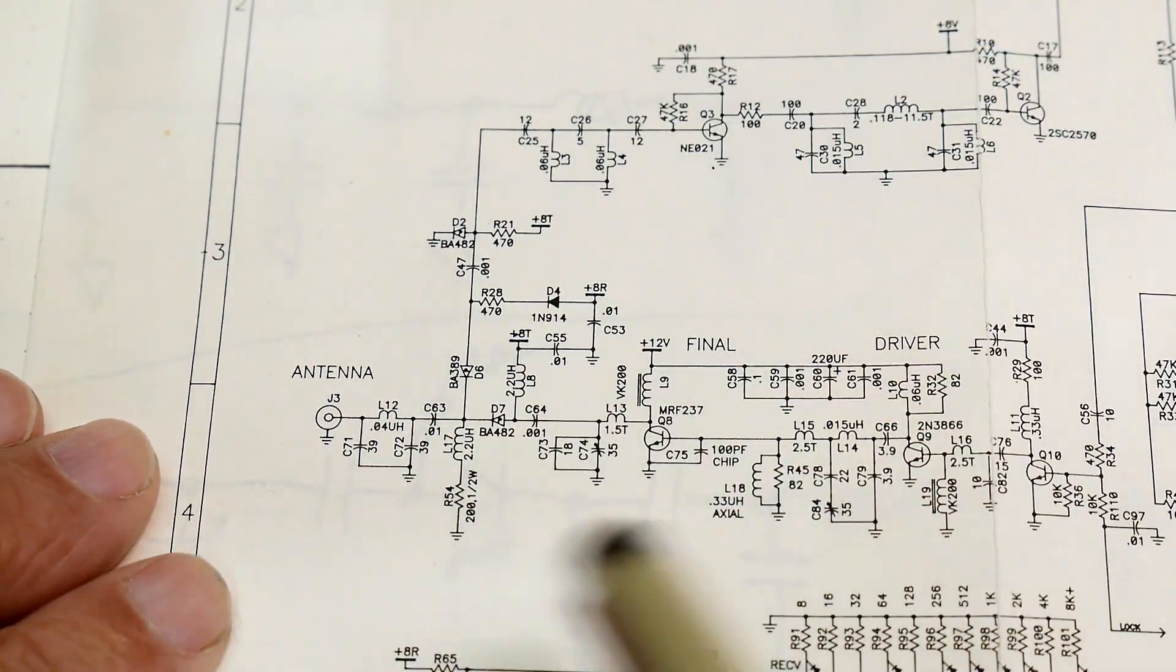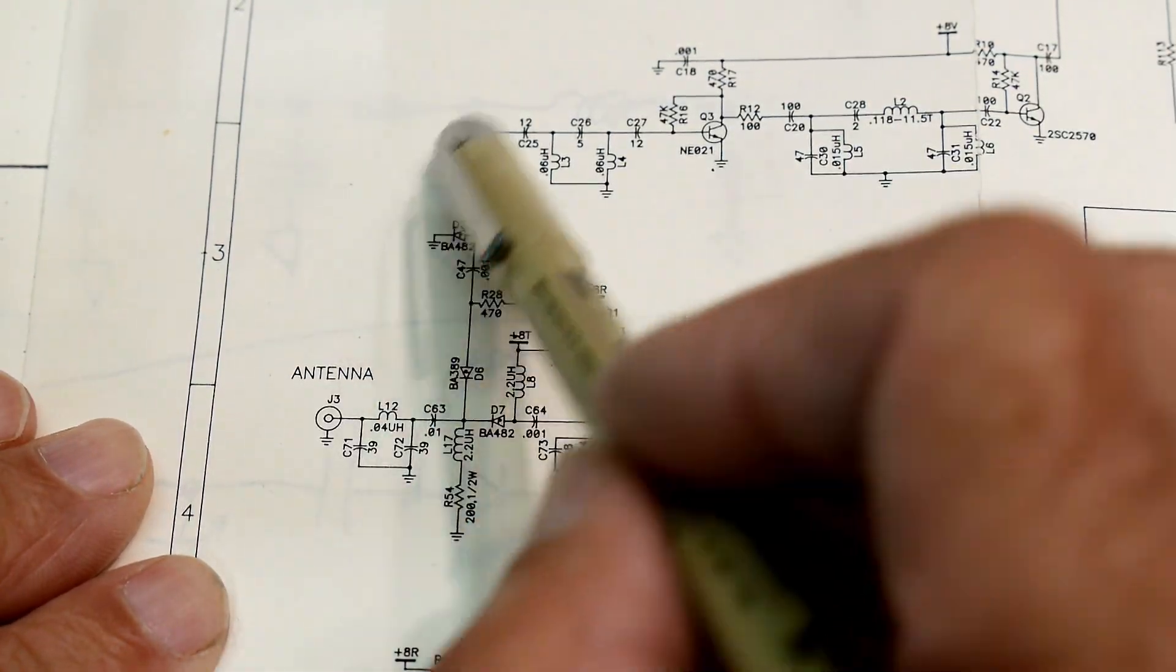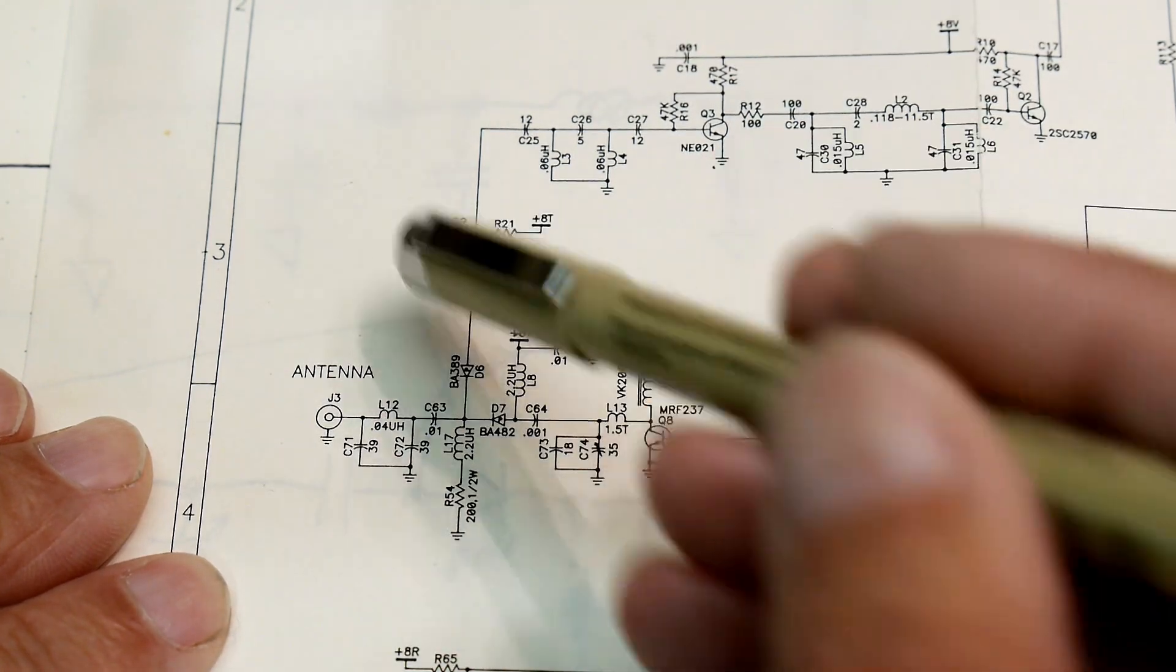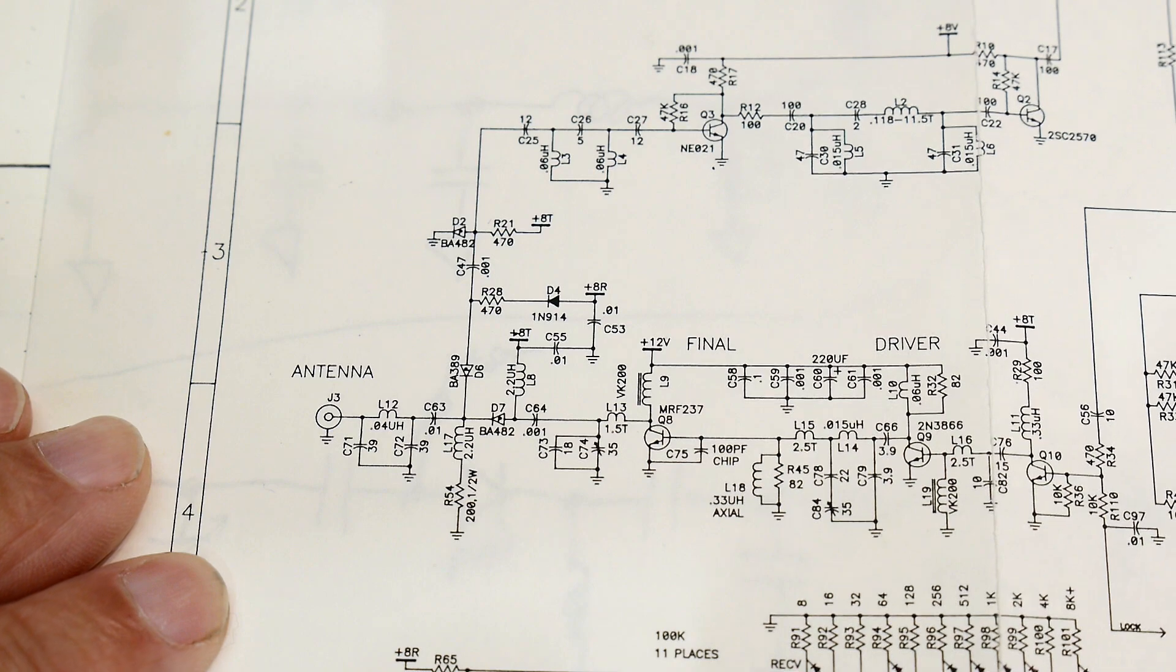So things go this way during receive and things go this way during transmit. And all of that pin diode switching in there is to keep things from talking to one another.